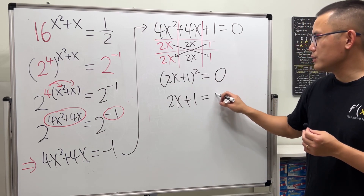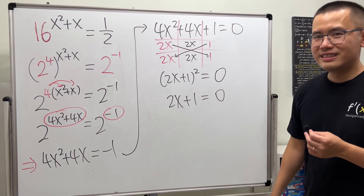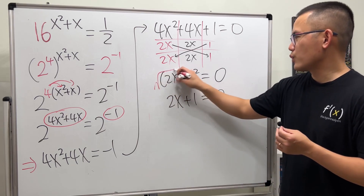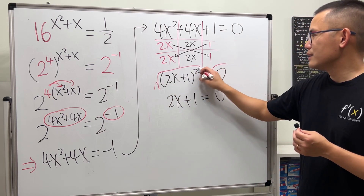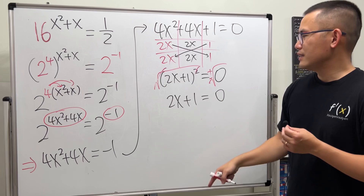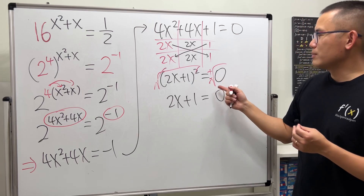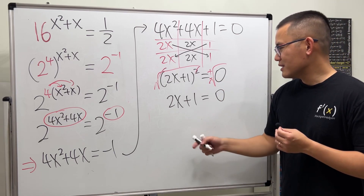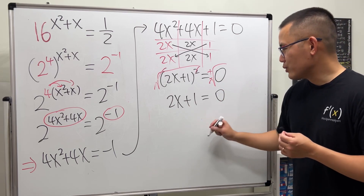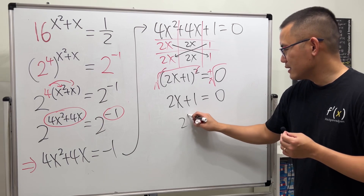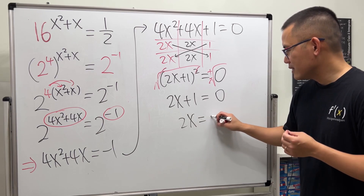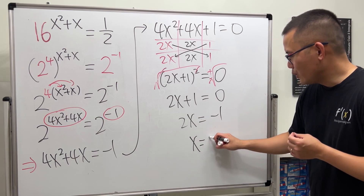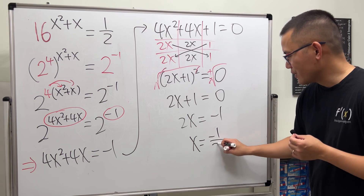For something squared to equal 0, the inside must equal 0. So 2x + 1 equals 0. You can also take the square root of both sides, giving plus or minus 0. Move the 1 to the other side, then divide both sides by 2, so x equals negative 1 over 2.